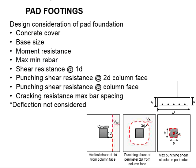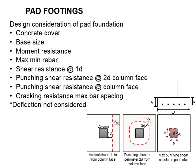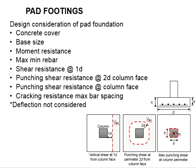Next, you will have to check the foundations in terms of shear resistance under three circumstances. First is the shear resistance at 1D from the column face. You need to determine the total shear load generated by the bearing pressure acting in those regions. That force is converted into shear stress by dividing by the effective section area, to be compared with the shear capacity of the section. Your shear resistance needs to be greater than the shear stress.